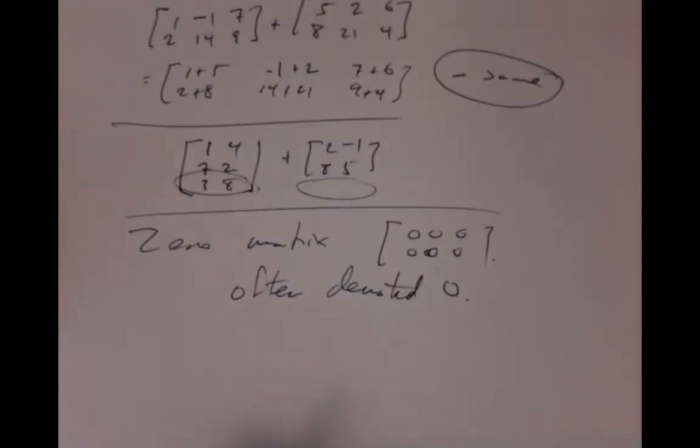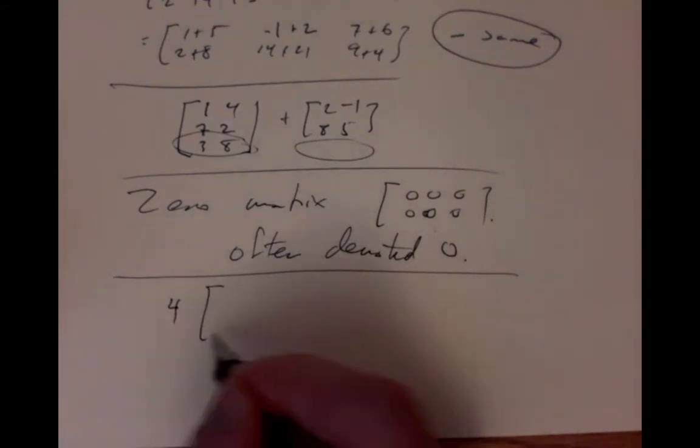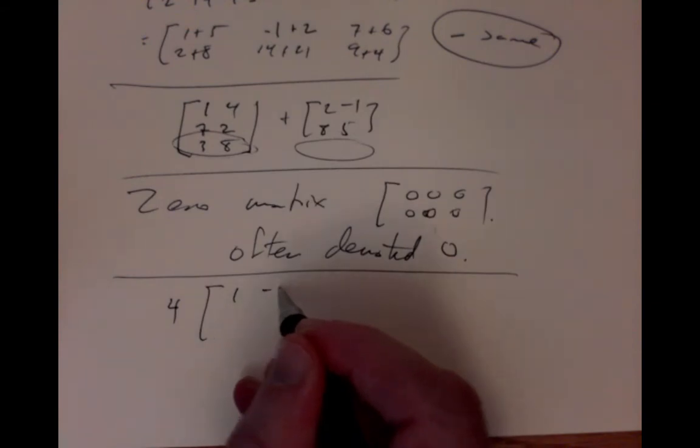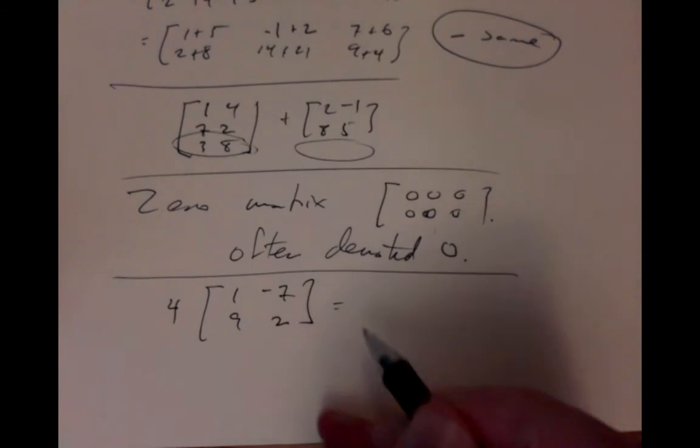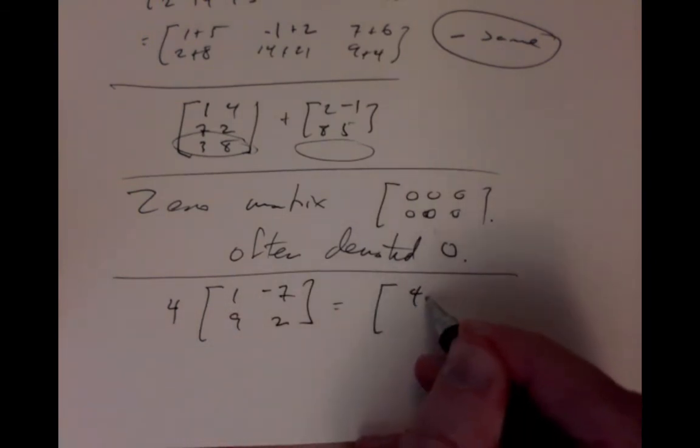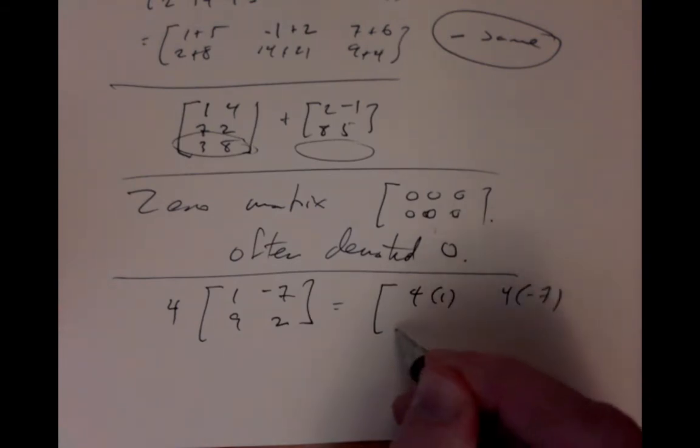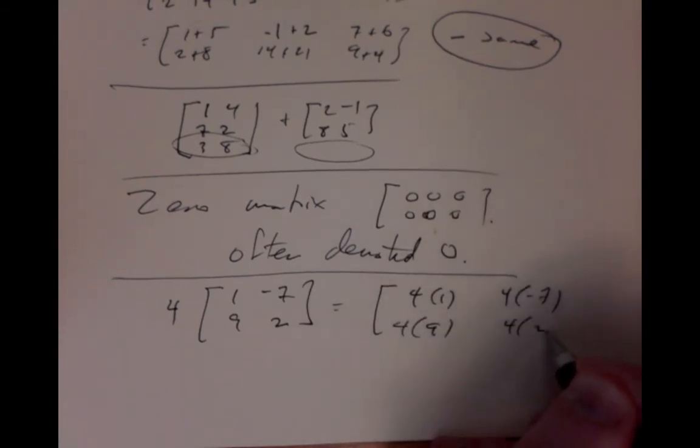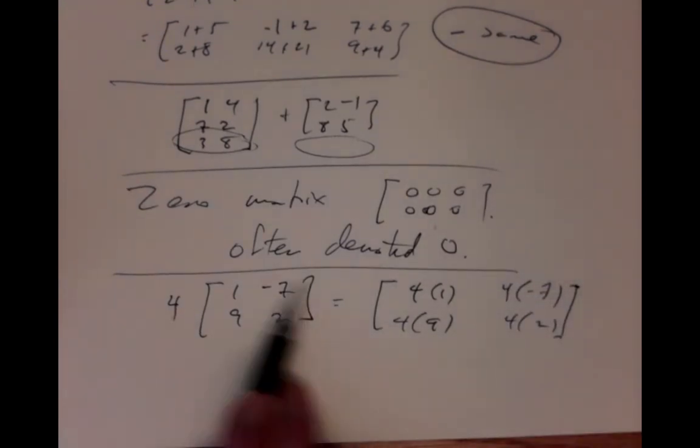We multiply matrices by numbers in also an easy way. If I want to multiply a matrix by 4, [1, -7, 9; 2] times a number, you just multiply all the entries by that number. 4 times 1, 4 times -7, 4 times 9, 4 times 2. So the obvious thing. You multiply a number times a matrix by multiplying all the entries by the number.